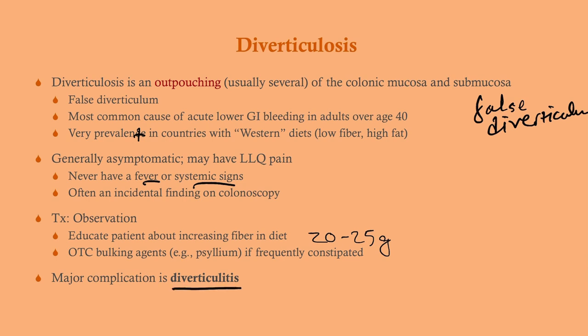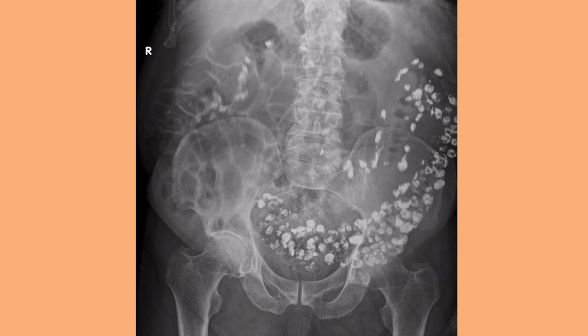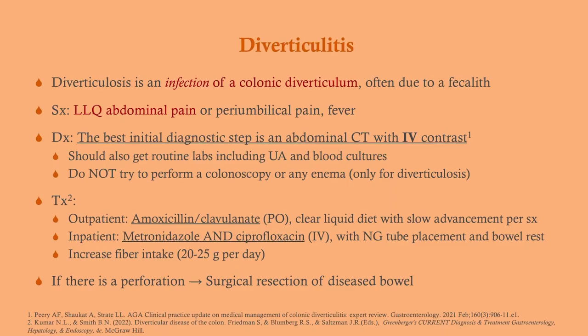The major complication is diverticulitis. On CT, diverticulosis looks like little bubbles along the colon wall. On barium x-ray or barium enema, or water-soluble contrast enema, you can see the diverticula as ticks. In severe cases they can extend from the sigmoid all the way to the descending colon and even up to the hepatic flexure, though usually they're restricted to the sigmoid region.